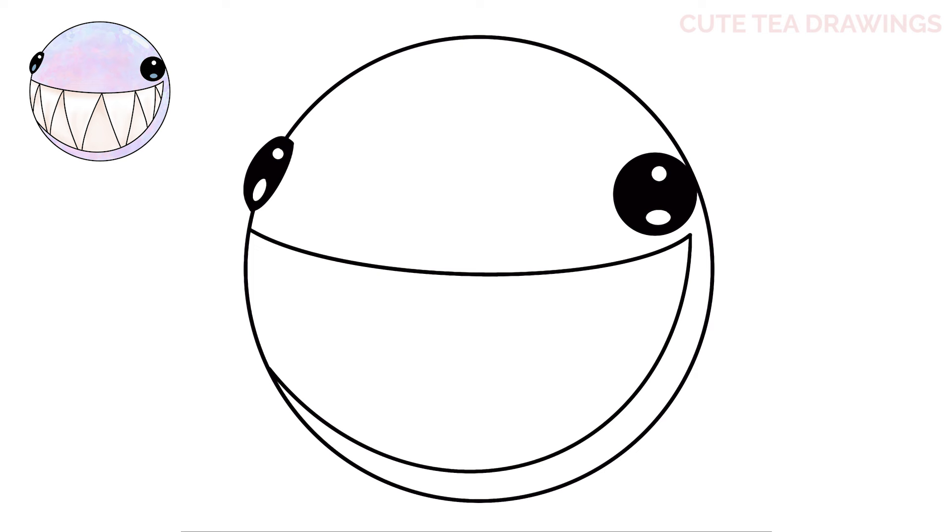Now let's hop inside and draw the teeth. Inside on the left, let's draw a curve up. And then angle it back down, forming an upside down V shape.